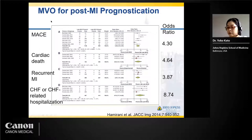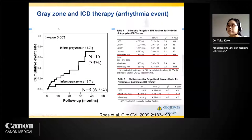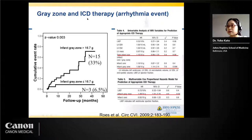MVO — microvascular obstruction — is a very strong prognostic factor in post-MI patients. In this meta-analysis, patients with MVO had higher rates of MACE, cardiac death, recurrent MI, and heart failure. Gray zone is another strong prognostic factor, especially for assessing arrhythmic events in post-MI cases. In this study, patients with a larger infarct gray zone amount had a higher occurrence rate of ICD therapy.